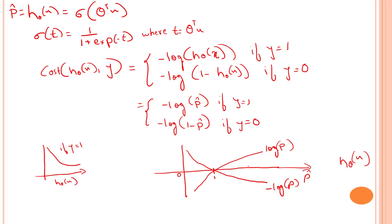So that's the key insight: minus log(p) grows very large when p approaches 0. The cost function will be large if the model estimates a probability close to 0 for a positive case — that is, there's a mismatch. And it will also be very large if the model estimates a probability close to 1 for a negative class.